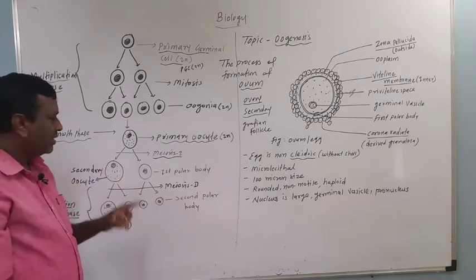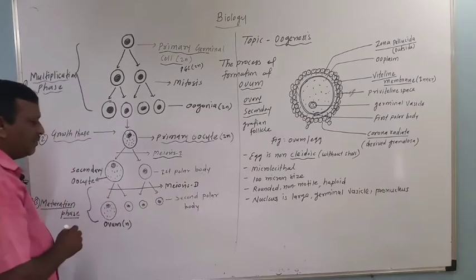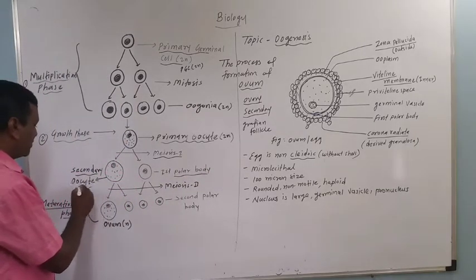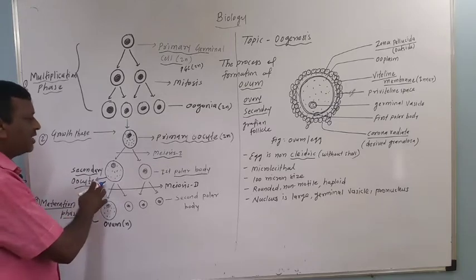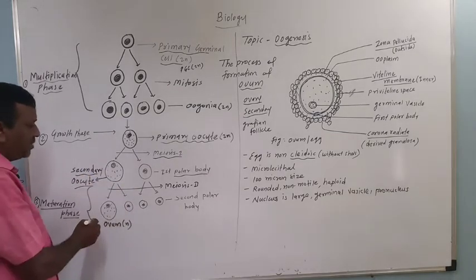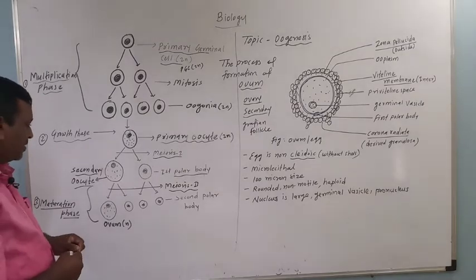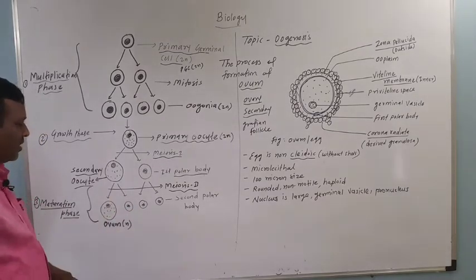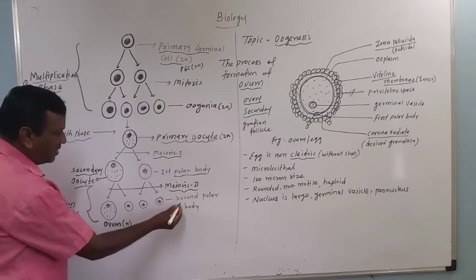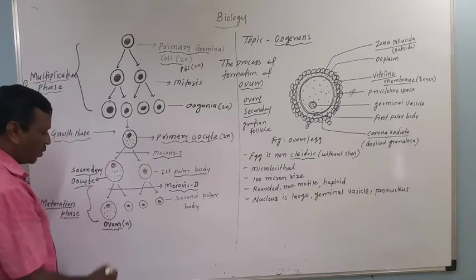Here meiosis takes place and two cells are formed. The first polar body is in the haploid condition, and the larger cell is the secondary oocyte. After that, the secondary oocyte and first polar body undergo meiosis second, each forming two cells, producing two second polar bodies and the ovum or egg cell.